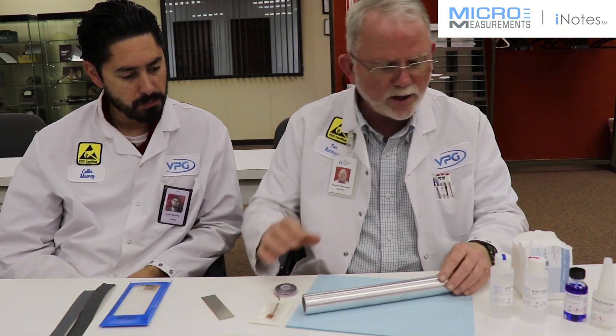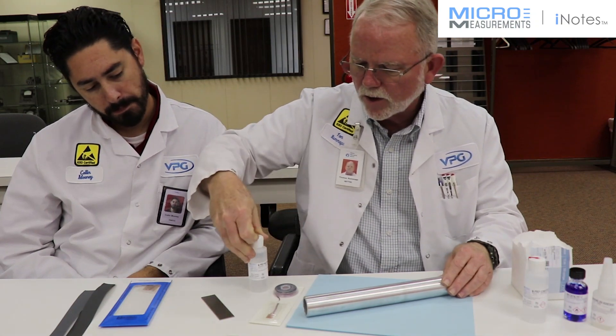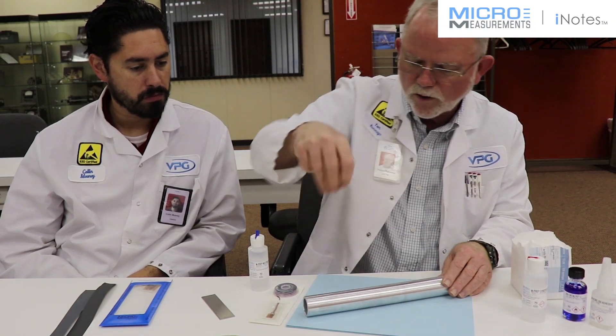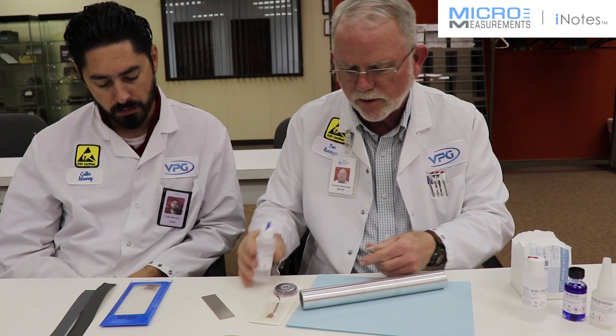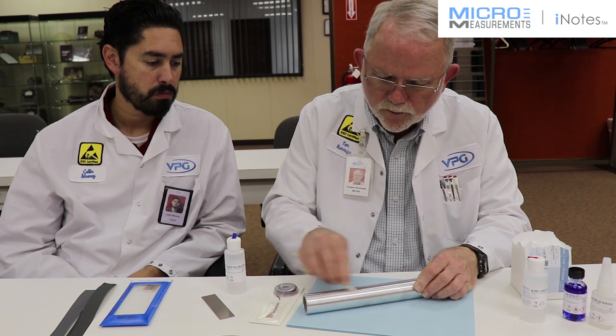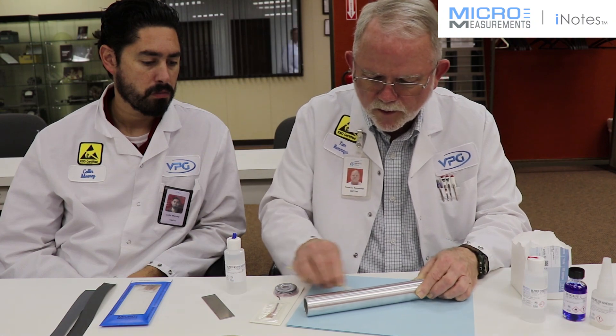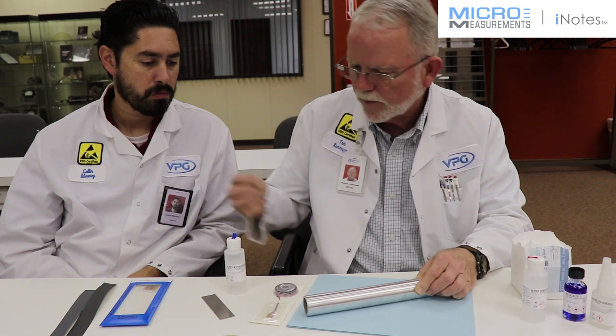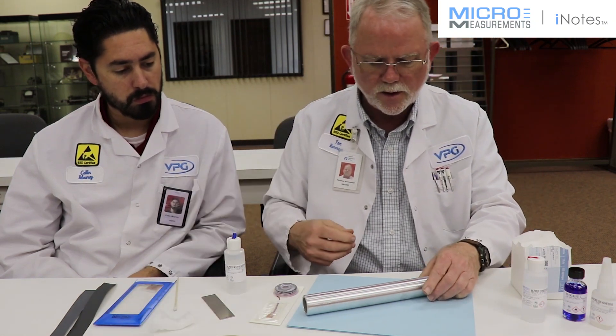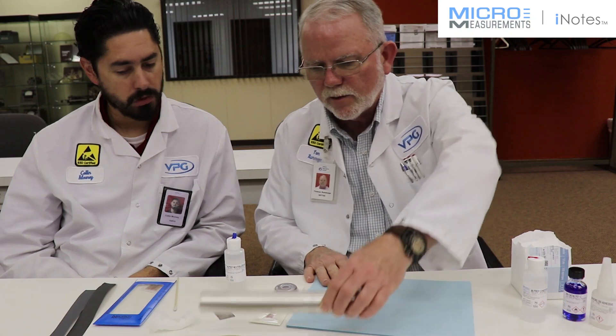Once we've done that, we need to take the neutralizer 5A in the location where we're going to first bond the 250US, because it doesn't have lead wires on it and the 187UV does. I'm going to take neutralizer 5A and at the alignment area for the 250US, I'm going to scrub it on both sides of that line. Take a gauze sponge and absorb that excess liquid from the neutralizer 5A. Now that we've made our mark and we're chemically clean, we need to stage the gauge.